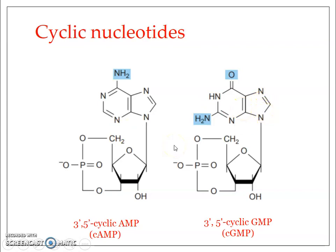You can see here where the molecule is getting cyclized — we'll look at the structural details of how cyclization occurs. Both cyclic AMP and cyclic GMP act as second messengers, or secondary messengers, for many other molecules like hormones and neurotransmitters.